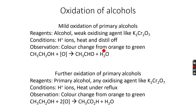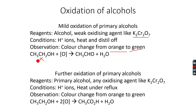The observation you get is that the color changes from orange to green. During oxidation, the color of potassium dichromate changes from orange to green, which indicates that oxidation has taken place. In the mild oxidation of primary alcohols, you can see that the alpha carbon atom is attached to only one other carbon atom, and this oxidizes to give an aldehyde.